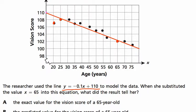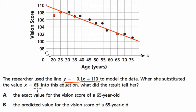They want to know when she substituted the value of x equals 65 into this equation, what did the result tell her? Well, you can plug it into the equation. You can plug in 65 for x, but you can also look at the graph. At 65, we're going to get about some number here. It could be exactly on the point we're already given, but it looks like it's slightly above it.